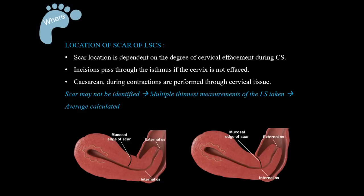The incision should ideally pass through the isthmus of the cervix if the cervix was not effaced. If the cesarean was performed during uterine contractions, the scar may have passed through cervical tissue instead, as shown in the diagram. When the scar location cannot be clearly identified, multiple thin measurements of the lower uterine segment are taken and either the average or the thinnest measurement is calculated.